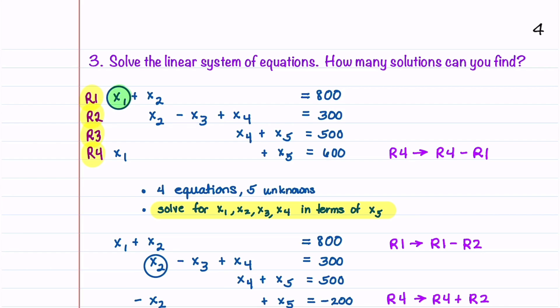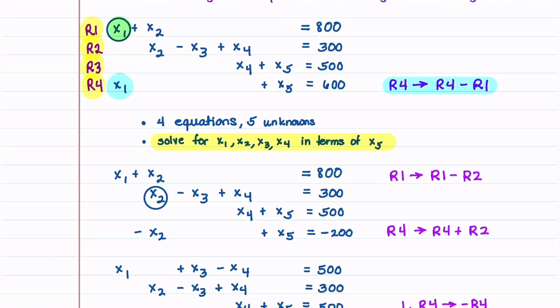We want to only have one equation that has an x1 term in it, and we'll choose that to be our first equation. That means we have to eliminate the x1 from our fourth equation. To do that we're going to do a row replacement. We're going to let row 4 become row 4 minus row 1. This is a new equation that we end up with.